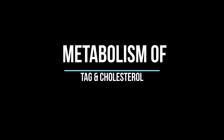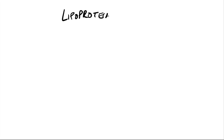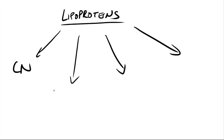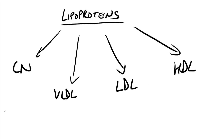Hey guys, this is Layla. Today we'll speak about the metabolism of TAG and cholesterol. I've already made videos on cholesterol, so I'll only speak a little bit about it. Starting with lipoproteins: plasma lipoproteins are spherical micromolecular complexes of lipids and specific proteins called apoproteins, or together apolipoproteins. They include chylomicrons (CM), VLDL, LDL, HDL — very low density, low density, and high density lipoproteins — and also IDL, which is intermediate.